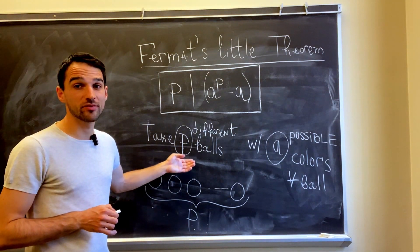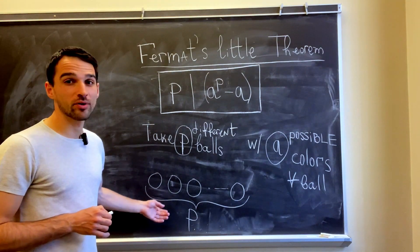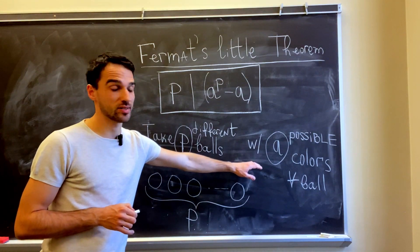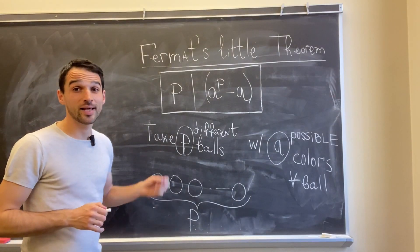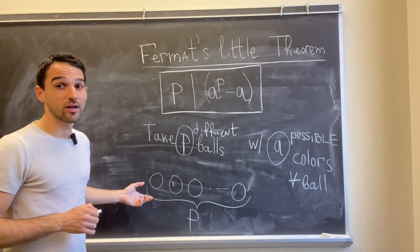So if I take p different balls, like here, and if I color each of them into one out of a different colors, then I have exactly a to the p different colorings for these balls. Why is that?